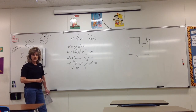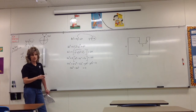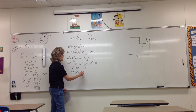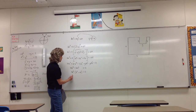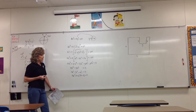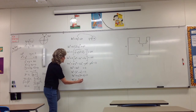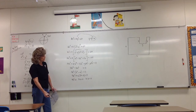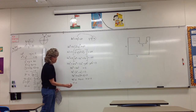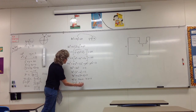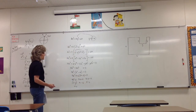We can factor out 4x squared: 4x squared times (x squared minus 4) equals zero. And x squared minus 4 is a difference of two squares, so it factors as 4x squared times (x plus 2)(x minus 2) equals zero. So either 4x squared equals zero, giving x equals 0; or x plus 2 equals zero, giving x equals negative 2; or x minus 2 equals zero, giving x equals positive 2.